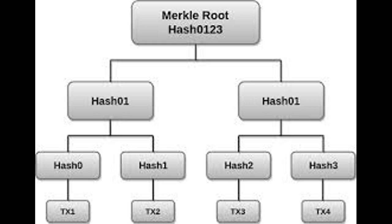Here comes the data, outcomes 256. Merkle trees. Hash value 32 bits. Merkle trees. Here comes the data, outcomes 256. Hash value 32 bits. Merkle trees.